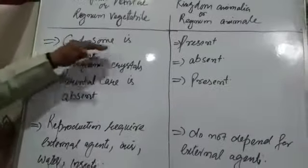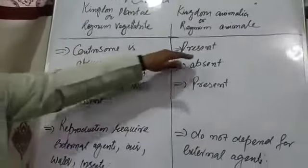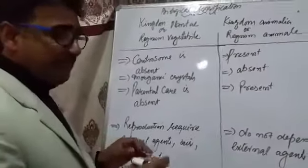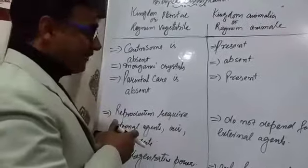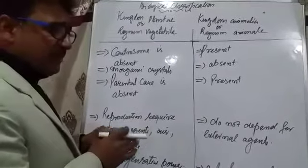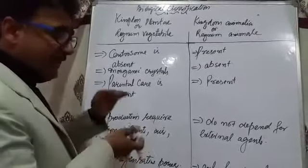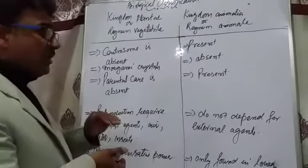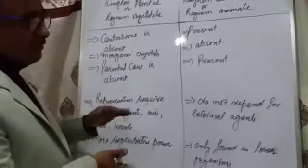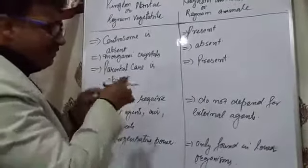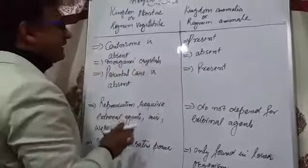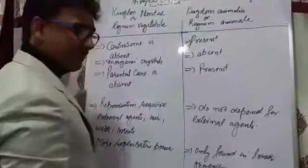In case of Kingdom Plantae, the centrosome is almost absent, while it is present in Kingdom Animalia. The centrosome is a cell organelle present within the cell which forms the asters or the microtubules which later develop asters, and these asters help in the movement of chromosomes towards the opposite poles, either in mitosis or meiosis.